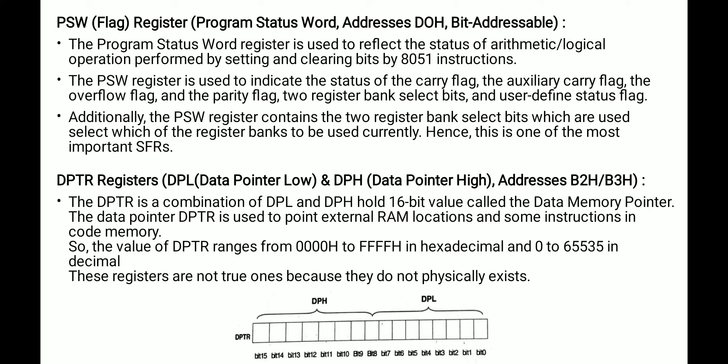The PSW register contains two register bank select bits: RS1 and RS0. There are four banks — bank 0, bank 1, bank 2, and bank 3 — each containing eight registers from R0 to R7. By setting RS1 and RS0 to 00, bank 0 is selected; 01 selects bank 1; 10 selects bank 2; and 11 selects bank 3. From the corresponding bank, the registers are used.